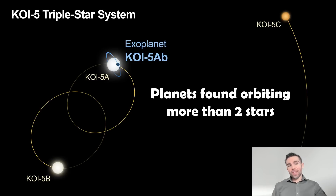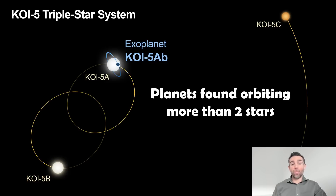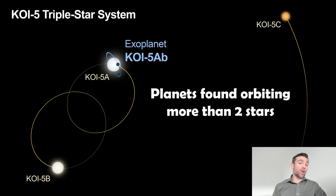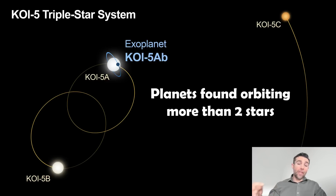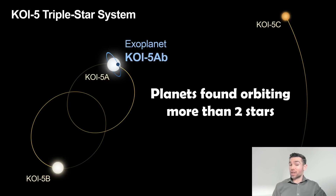Planets have been found orbiting more than two stars. Here's an example: KOI 5A, B, and C — three stars. The exoplanet KOI 5AB is orbiting primary star A. You've essentially got a binary star, then a third star orbiting on the outside of that, and then an exoplanet orbiting one of the binary stars. So we know that there are planets orbiting more than two stars.